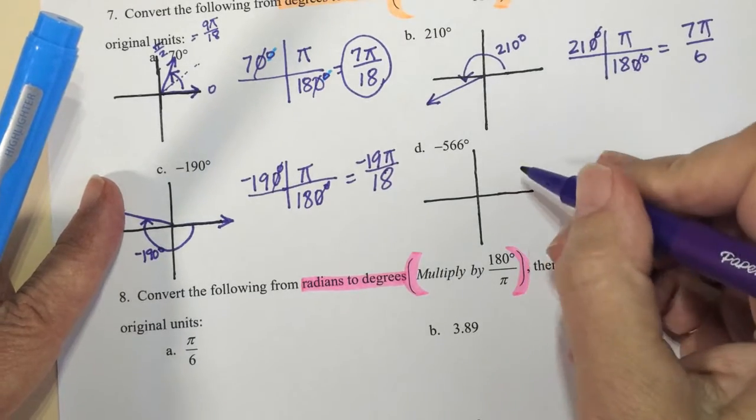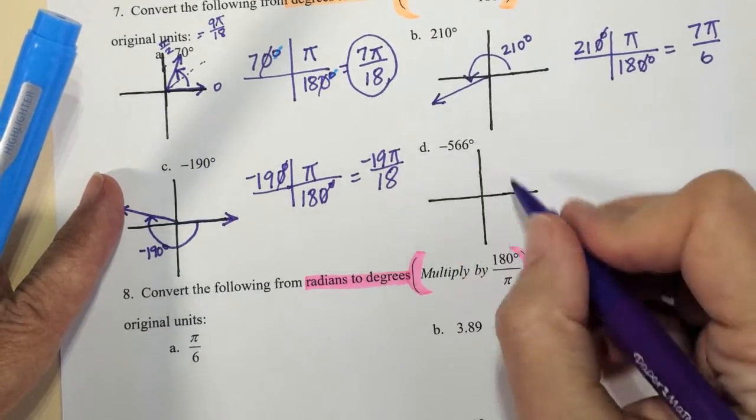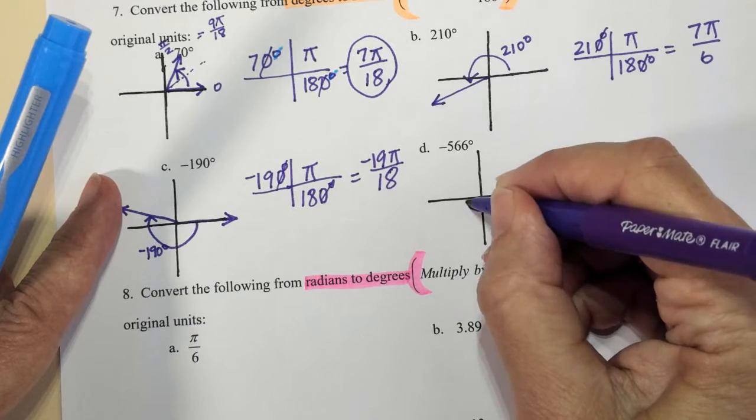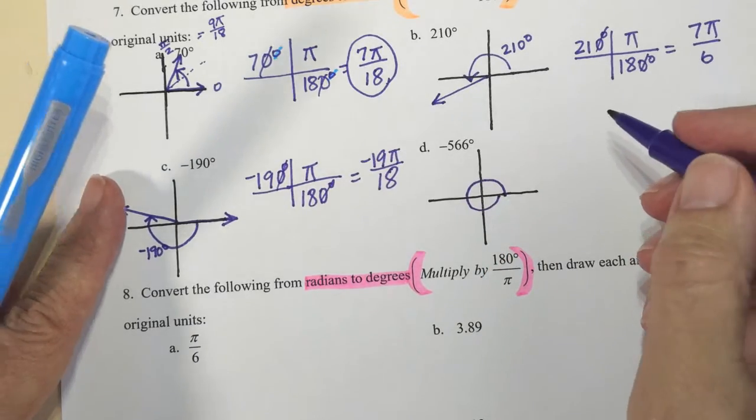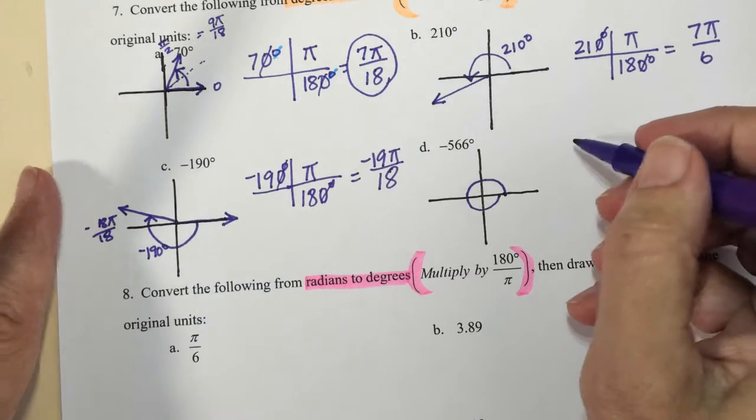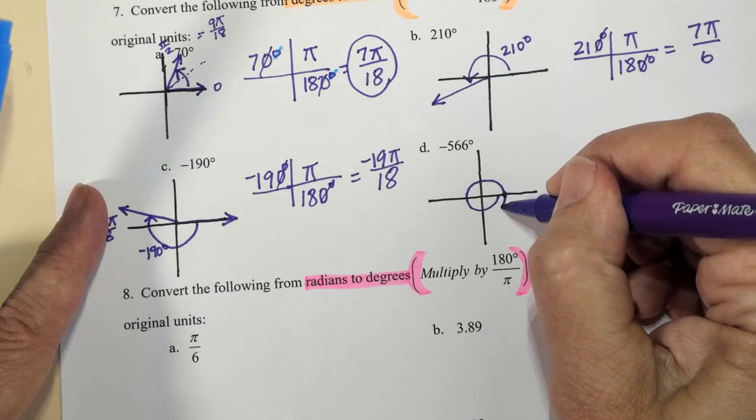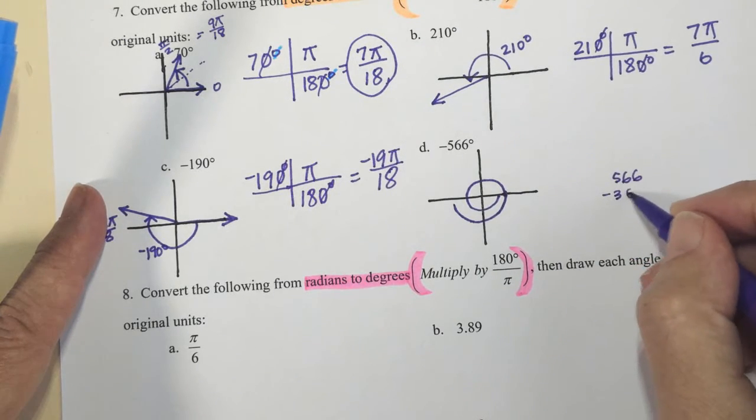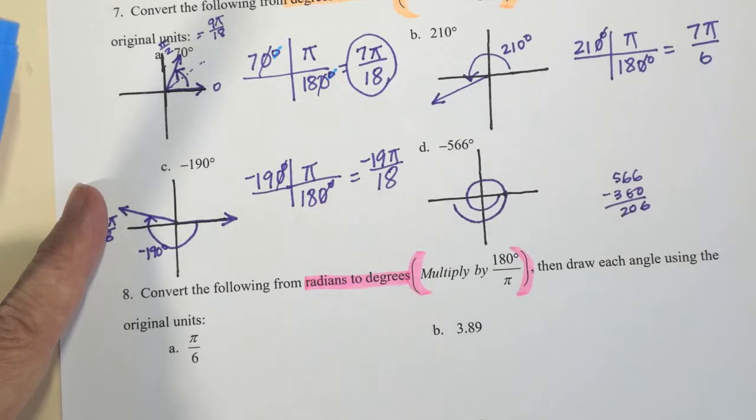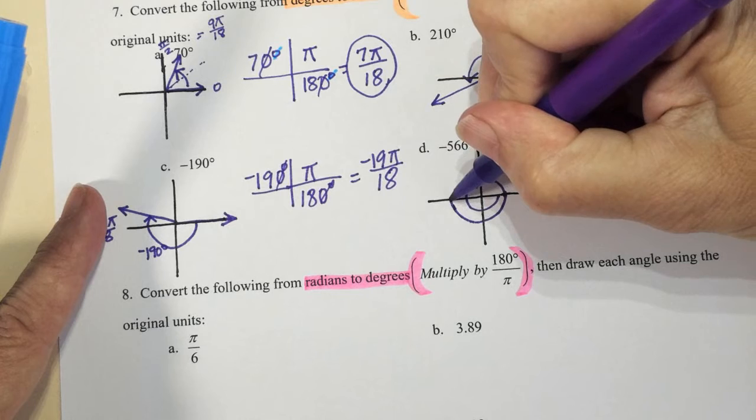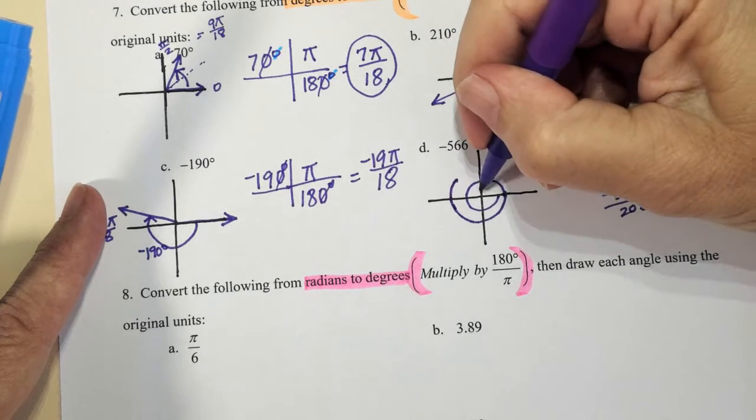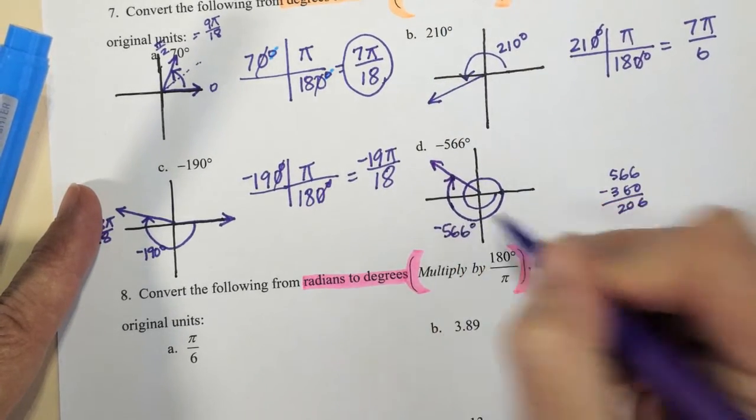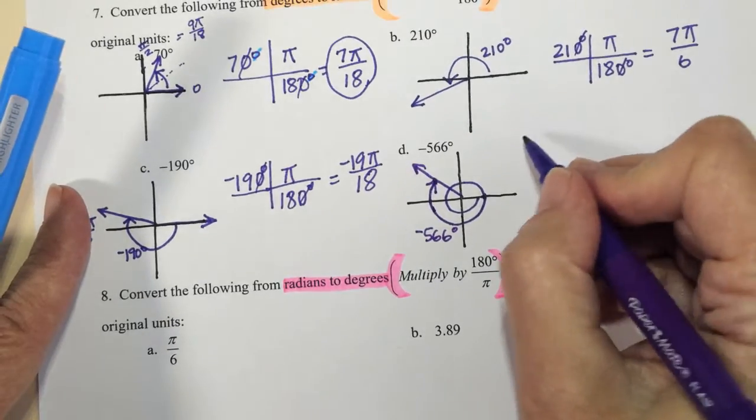So if you struggled with D, remember that it's negative, so we're going in the clockwise direction. So if I go all the way around once, that's 360. And then I still need to go a little bit more. So I need to go 360, and then I can think about it as 566 minus 360, so I need to go 206 more. So this is 180 more, so then I need to go a little bit more than that. So that would be my negative 566 degree angle. And then you're just setting up the math the same way.